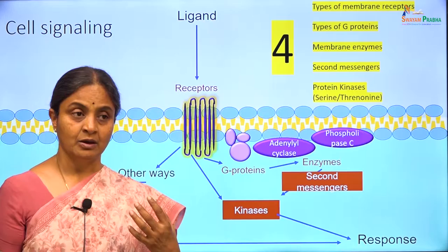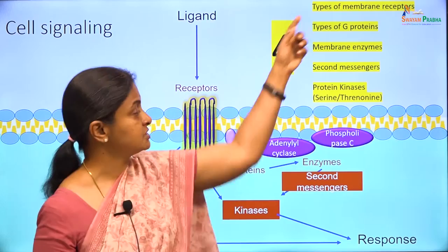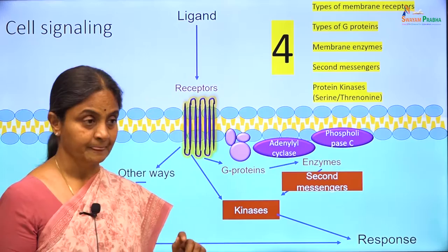We will now do the rule of 4 — declaring variables — specifying how many types of each individual molecule there are. We will talk about 4 types of membrane receptors, 4 types of G-proteins, 4 membrane enzymes, 4 second messengers, and 4 protein kinases.